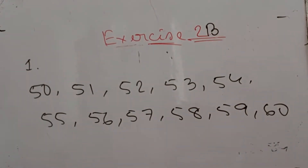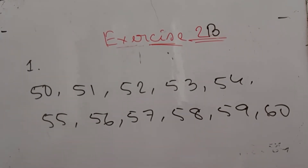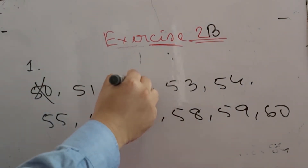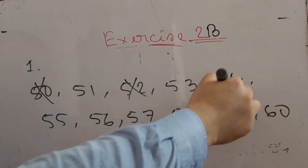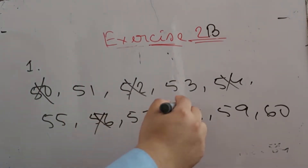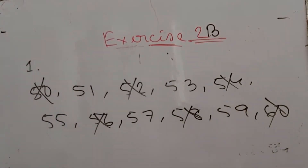Now look at this. We already know that 2 is the only even prime number. So after 2, there isn't any even prime number. So we can cut every even number — 50, 52, 54, 56, 58 and 60 are not prime.